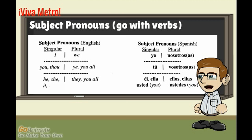Moving on to the plural side, you have 'nosotros' or 'nosotras,' which corresponds to 'we.' You have 'vosotros' or 'vosotras,' which corresponds to 'ye.' And you have 'ellos' (they), 'ellas' (also they), and 'ustedes,' which is the formal plural you.